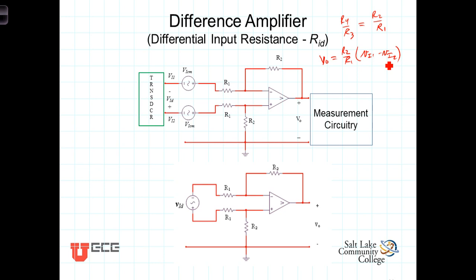The second advantage of this configuration was the common mode rejection. That noise that was absorbed by the leads or noise that might exist on both of the leads of the transducer was eliminated through this difference amplifier.